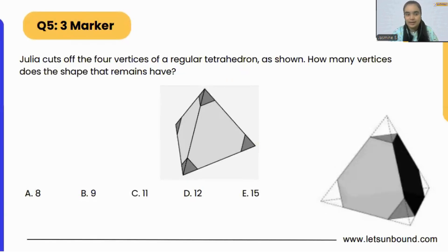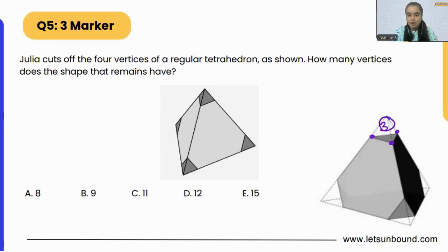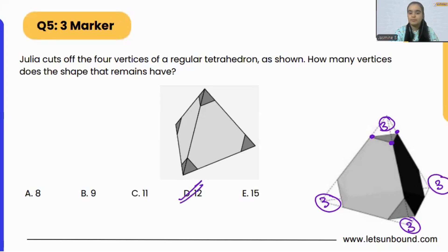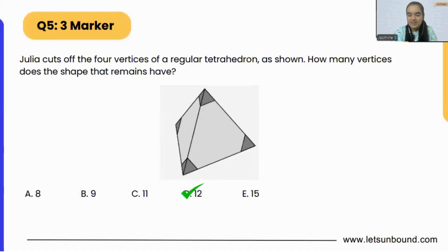If we look at a clearer picture of the tetrahedron, you can see only one, two, and three vertices remain at the top cut. Again three will be here, three will be here, and three will be here — so three times four equals twelve. That makes sense, and that is the correct answer: option D.